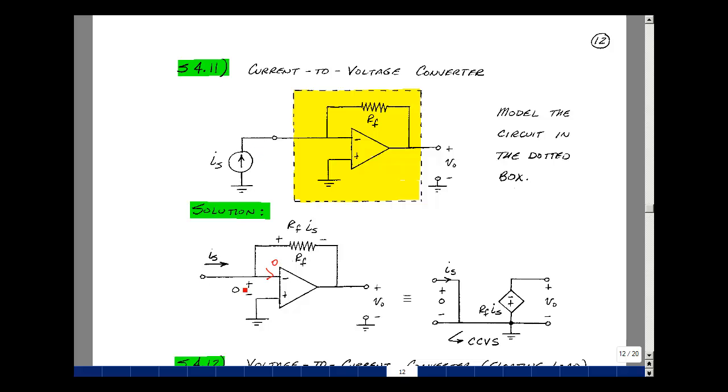So the current that's coming in here, Is, all of it has to go into the feedback resistor, back through the controlled source, back to ground, really back through the power supply.